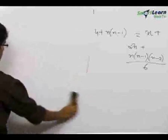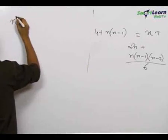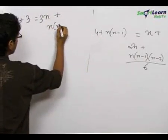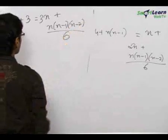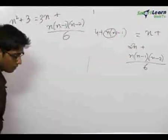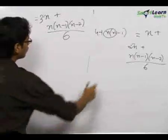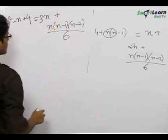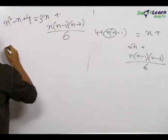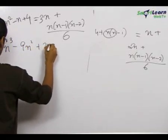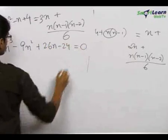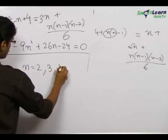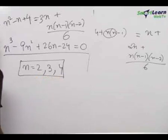Simplifying, we get the equation n² − n + 4 = 3n + n(n−1)(n−2)/6. On further simplification, this leads to the cubic equation n³ − 9n² + 26n − 24 = 0. Solving this cubic, we get n = 2, 3, and 4, which is our final answer.